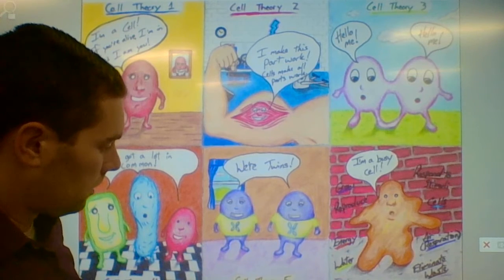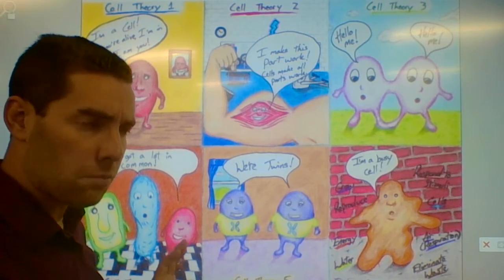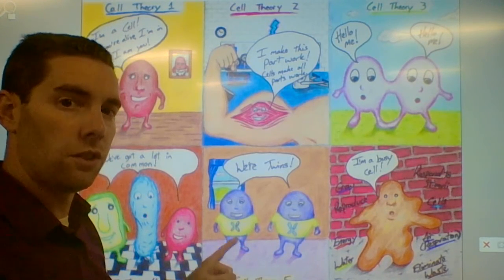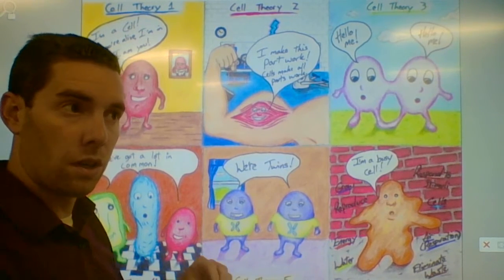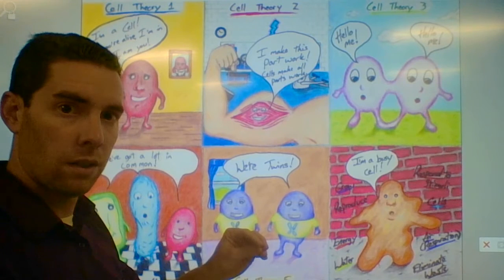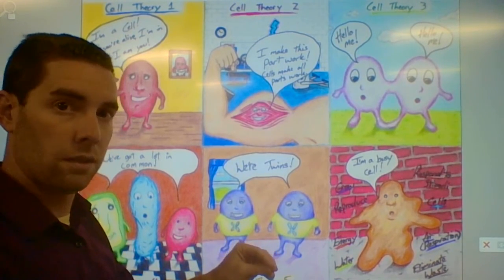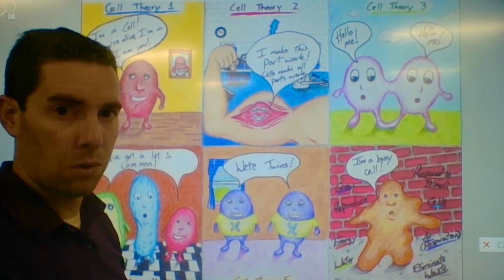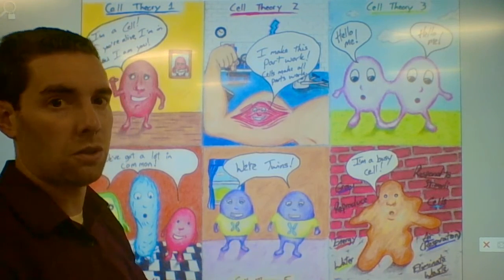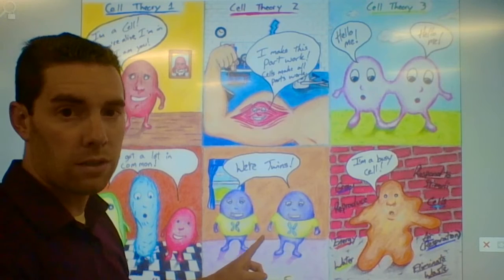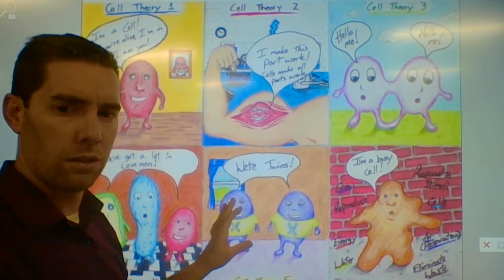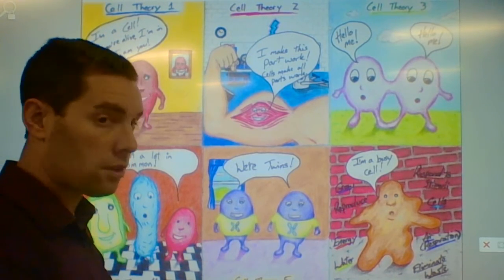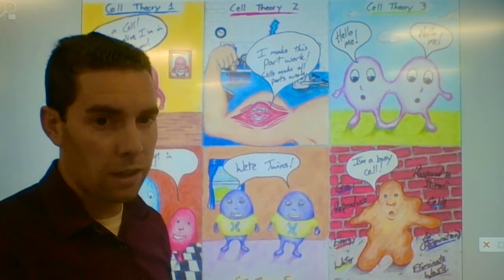Cell theory number five says that all cells pass on identical hereditary materials — the same DNA. Every cell in your body is a twin. You originally started as one cell, and that same DNA that no other organism had ever had before has been duplicated trillions and trillions of times. So every cell in your body, even if they look a little different, has the same DNA. Mine says 'we're twins' and has little chromosomes on their shirts, with a colored background.